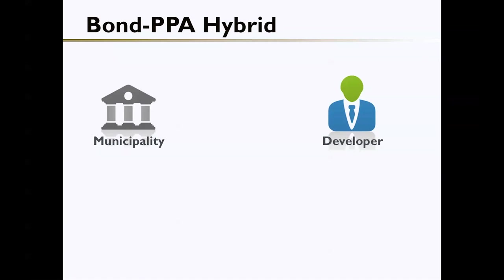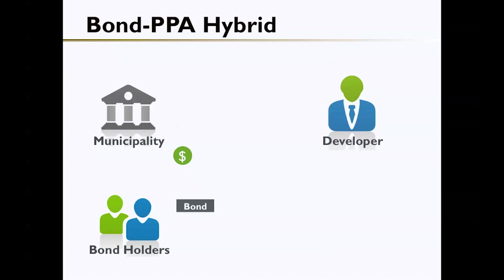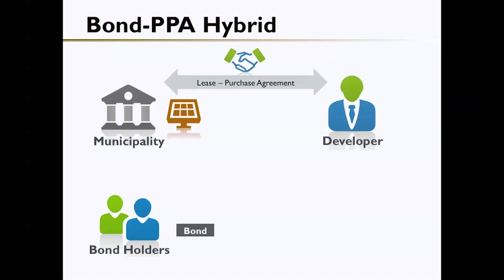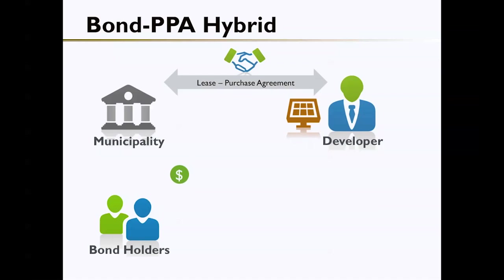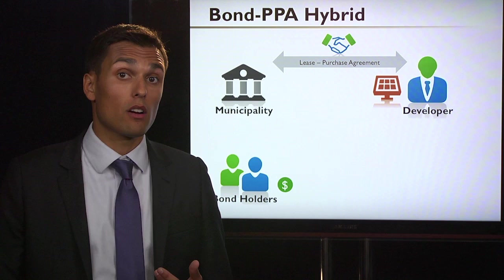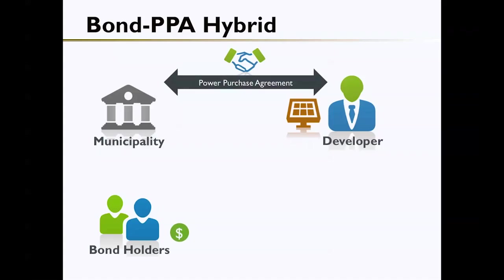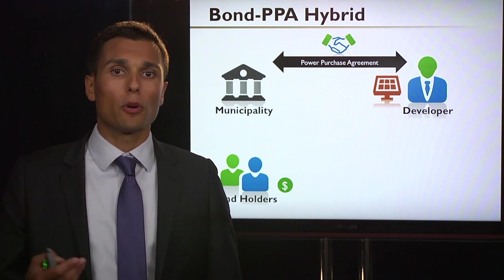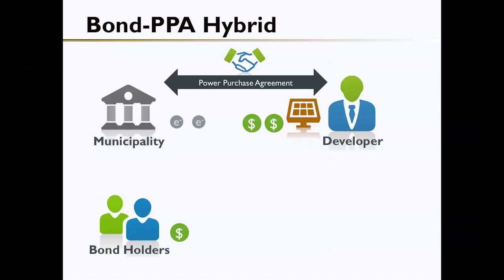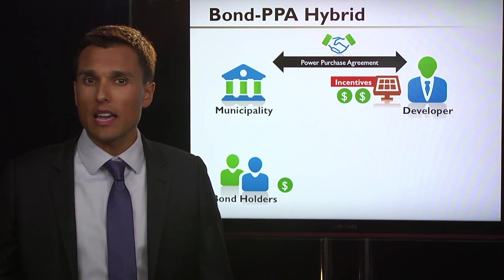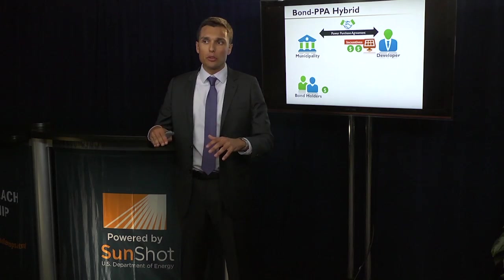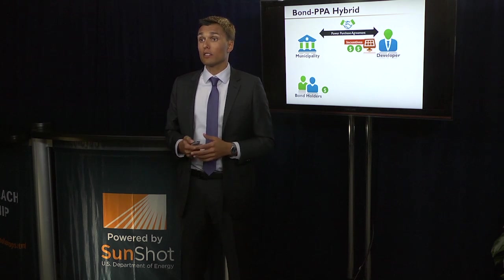To illustrate how this works: a municipality chooses to issue a bond and sell that bond to bondholders in order to raise capital. The municipality then purchases the equipment for the installation, and through a lease purchase agreement, leases the system to the developer such that in the eyes of the IRS, the developer is actually the owner. The municipality uses money received through the lease payment to pay back bondholders in principal and interest. Then, just like the third-party ownership option, the municipality enters into a power purchase agreement through which the developer sells electricity back at a predetermined price. The developer can also take the incentives, and that value — investment tax credit and accelerated depreciation — can be built into the PPA price, resulting in a higher return on investment for the municipality.